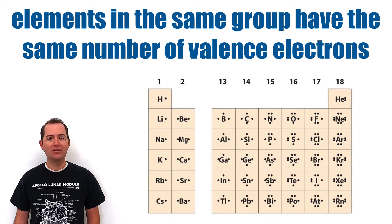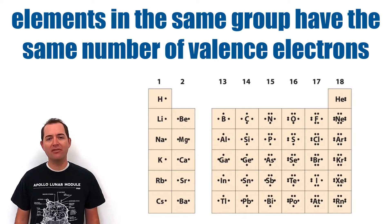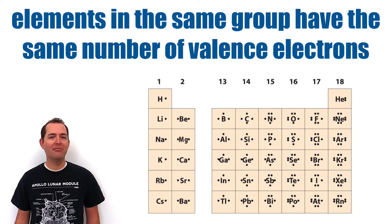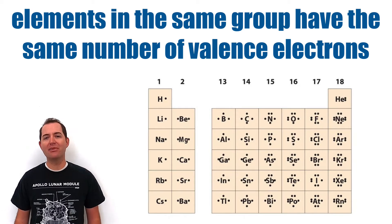We can also use the periodic table as a tool for determining the number of valence electrons in an element. This is done based on the group or family that the element is in.